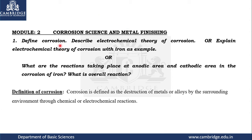The definition will fetch you 1 mark, and the electrochemical theory reactions — there is an anode reaction, a cathode reaction, and the formation of rust. If you write this much, it is easy to get nearly 6 marks. Let's see the definition.